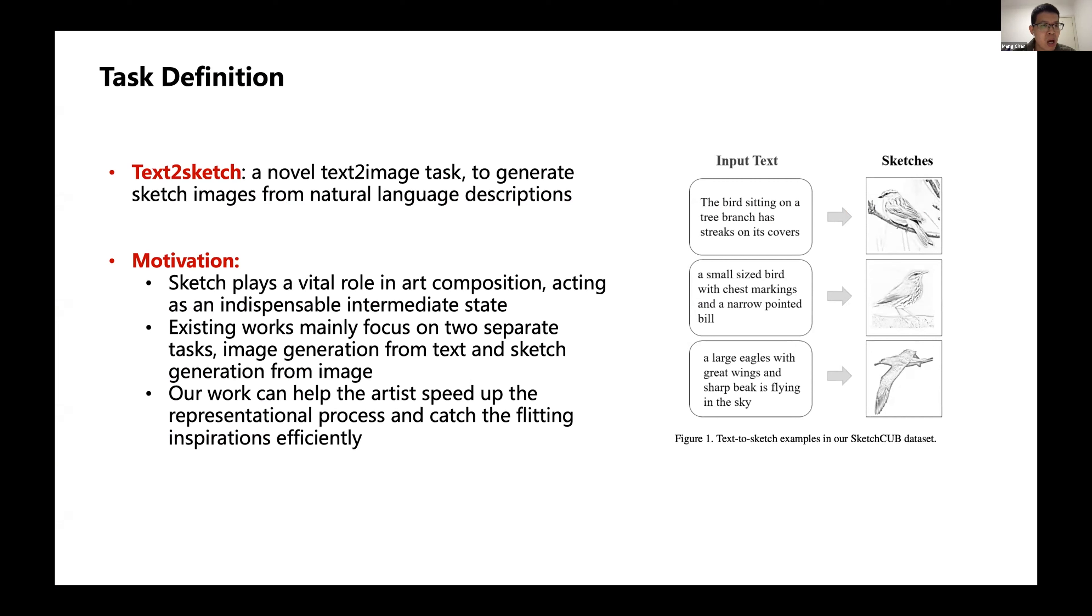First I'll introduce the task. It's a novel task because most of the time we talk about text-to-image, but we rarely talk about text-to-sketch. The task is to generate sketch images from natural language descriptions. As the figure on the right shows, the input text can be descriptions of birds, and then we need to generate sketches based on those descriptions.